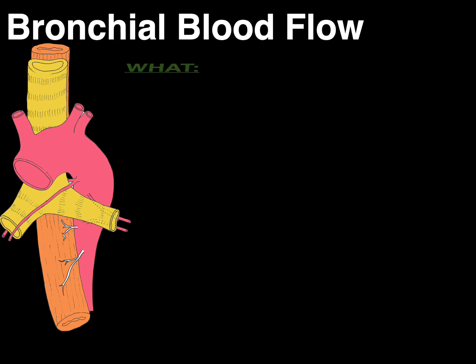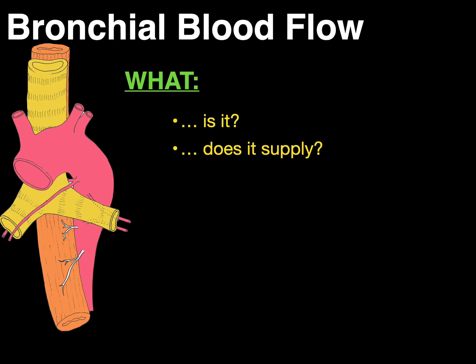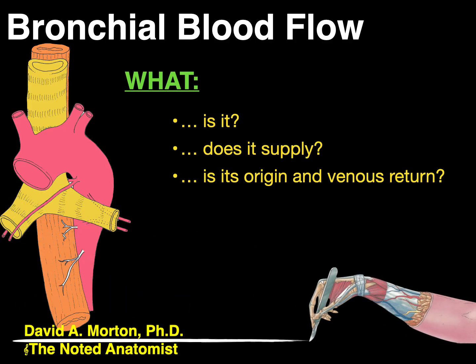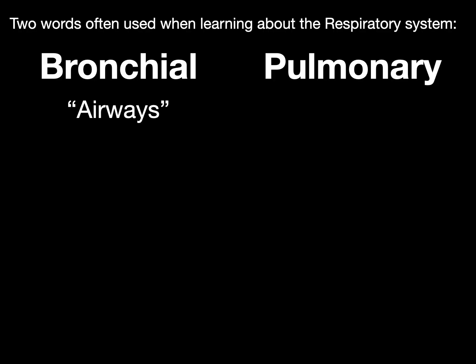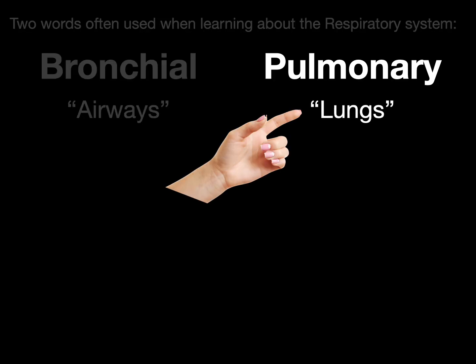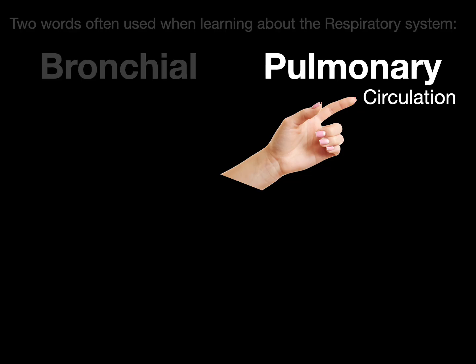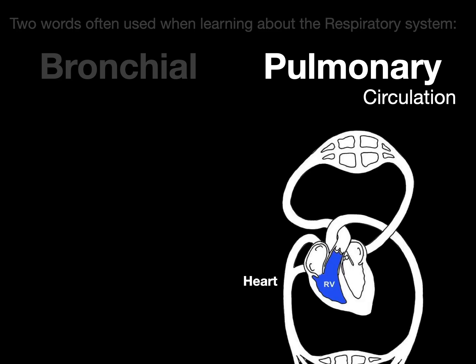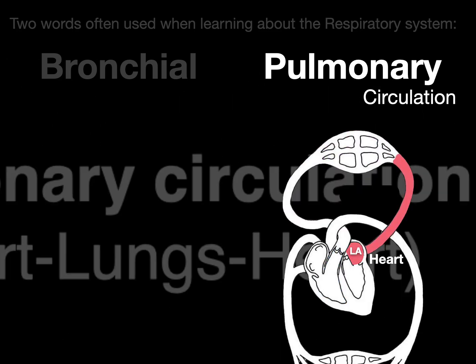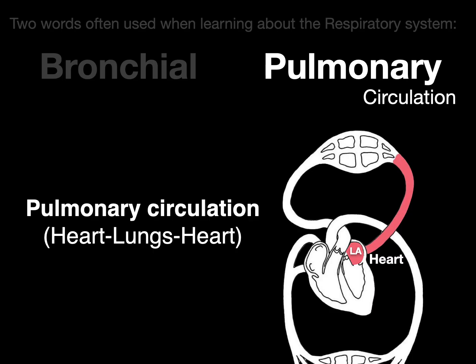We're going to talk about bronchial blood flow and answer the questions: what is it, what does it supply, and what is its origin and venous return. There are two words often used when learning about the respiratory system: bronchial, which means airways, and pulmonary, which means lungs — specifically alveoli. The pulmonary circulation is blood that goes from the heart to the alveoli and back, where gas exchange occurs: right ventricle → alveoli → left atrium.